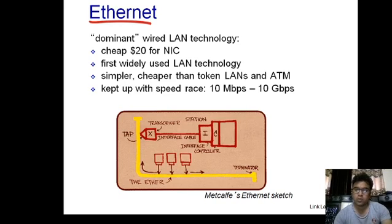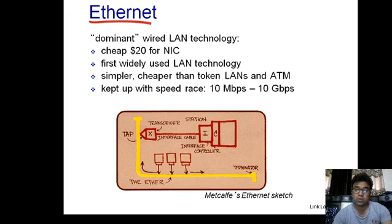Hello and welcome to the course of Computer Networks Part 2. Today we are going to discuss one of the most dominating and important protocols for the data link layer. This protocol is used for creating local area networks — it is none other than Ethernet. It was originally a wired technology, cheap, and it was the first widely used LAN technology, simpler and cheaper than Token Ring and ATM. Its speed ranges from 10 Mbps to 10 Gbps.